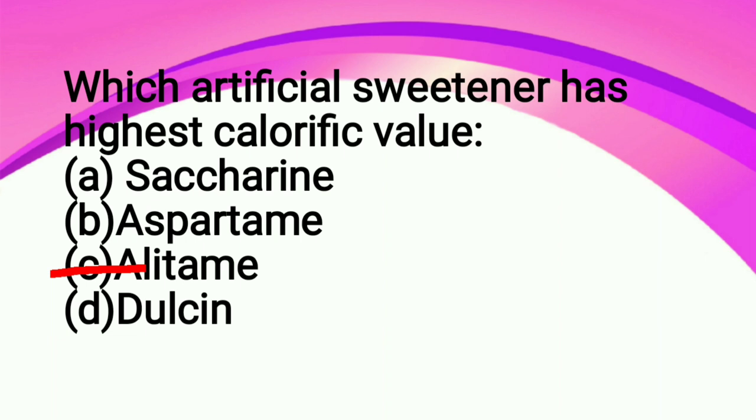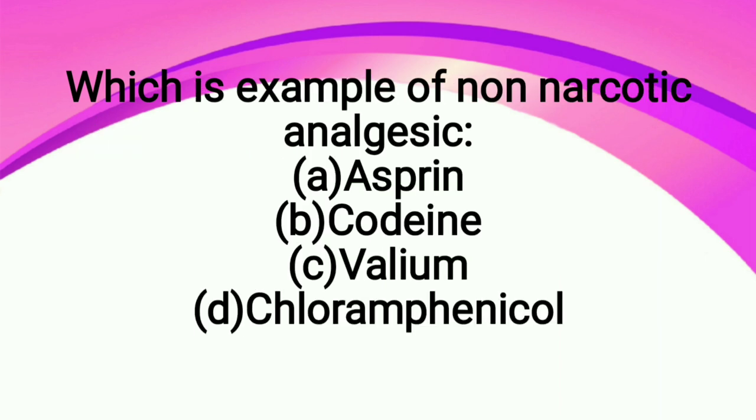Next question: which is an example of non-narcotic analgesic? Option A aspirin, option B codeine, option C valium, option D chloramphenicol.